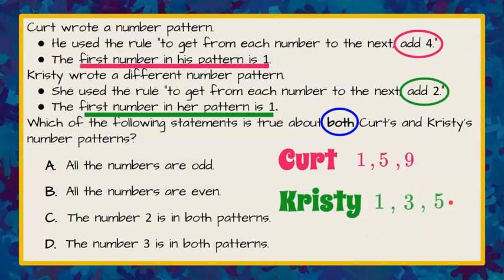We could keep going. Five plus two is seven. But we can do more of that if we need to in a minute. So let's look at our answer choices.